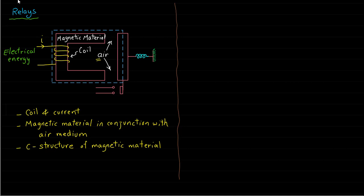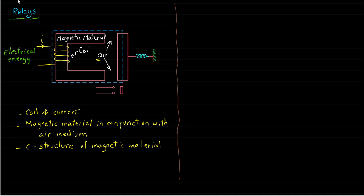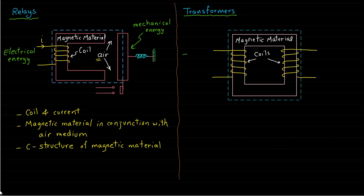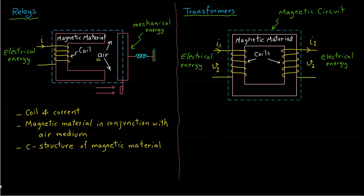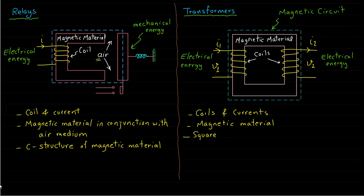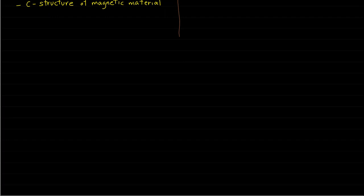The relay converts electrical energy into mechanical energy because of the presence of this magnetic circuit. Now let's move on to the transformer. The transformer is used to convert electrical energy from one voltage and current level to another voltage and current level. This conversion happens because of the presence of the magnetic field or the magnetic circuit. The magnetic field flowing through the magnetic material is produced by using coils and electrical current. The square structure of the magnetic material of the transformer is used to shape and direct the magnetic field and obtain high magnetic field density.